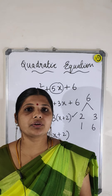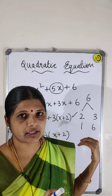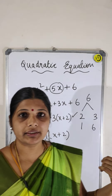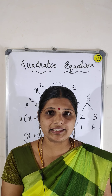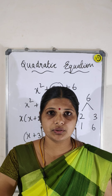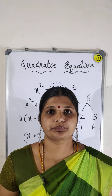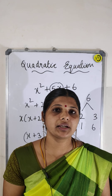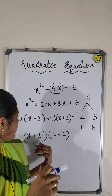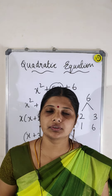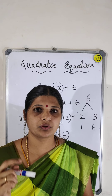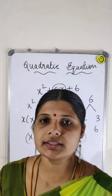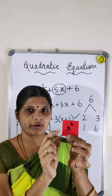Now this video is going to show you (x+3) and (x+2) visually. I am going to use color chart papers so you can see that x+3 and x+2 are the two factors.